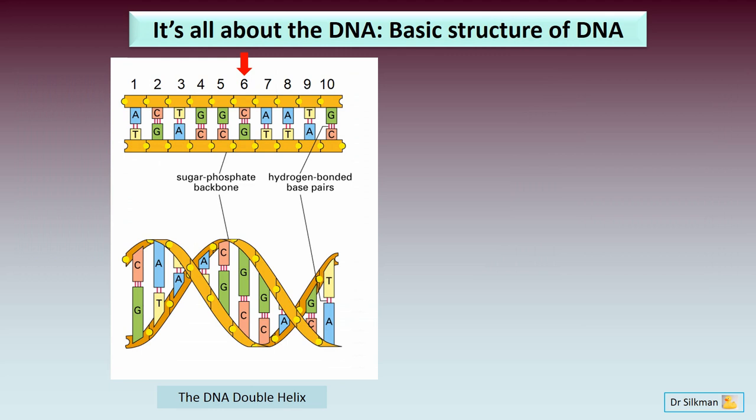Let's have a look at the basic structure of a DNA molecule. DNA is essentially a double-stranded molecule with four bases: A, G, C, and T. A specifically base pairs with T, and G specifically base pairs with C, forming a double-helical structure.